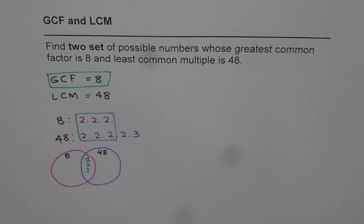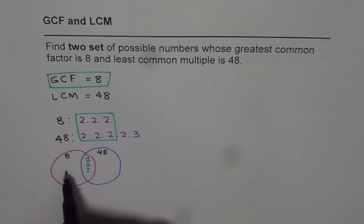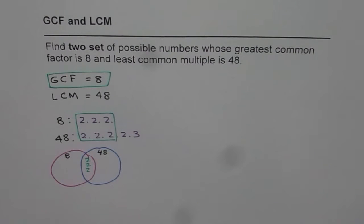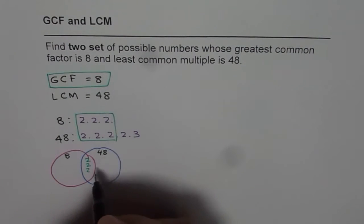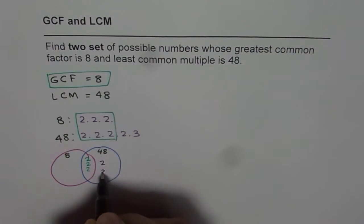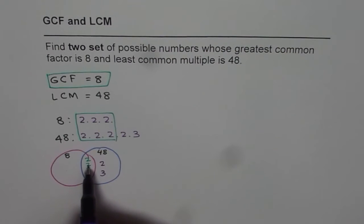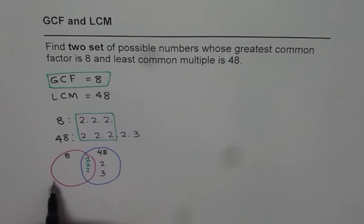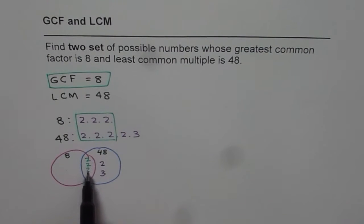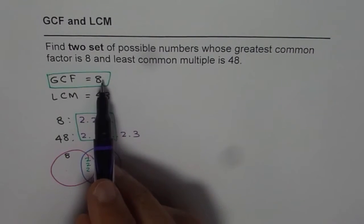How about the other factors? For 8 we do not have any other factor — all three 2s are already included. But for 48 we have 2 times 3, so we can write 2 times 3 on that side. So 2 times 3 are the remaining factors for 48, and for 8 we have 2 times 2 times 2. The common between the two is 2, 2, 2.